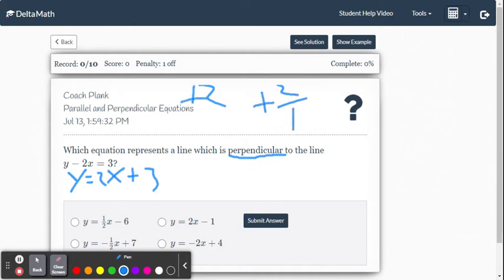So if it asks for a parallel line, we'd use 2 as our slope. But perpendicular, it's going to be opposite and reciprocal. So opposite sign of positive is negative, and reciprocal of 2 is 1 over 2.